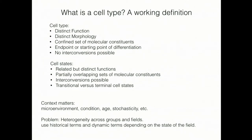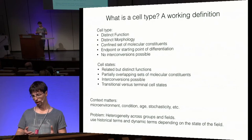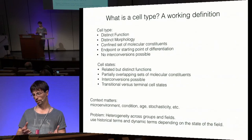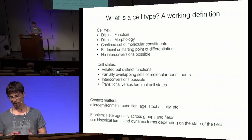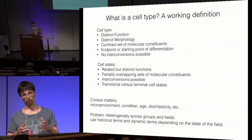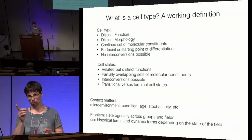Morphology is a classical criterion we would like to keep. More specifically for the Human Cell Atlas, we would like to consider a cell type as a confined set of molecular constituents — RNAs, proteins, or whatever we measure. You can think of a cell type as a confined manifold in parameter subspace: cells occupy vectors in an n-dimensional space and cannot move freely but must be confined.